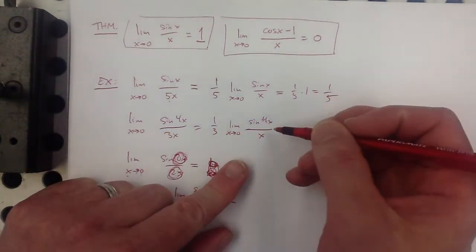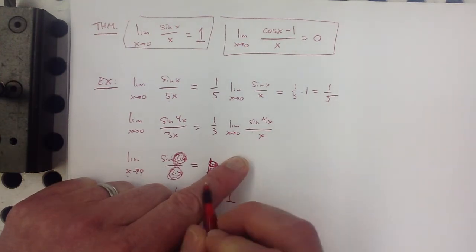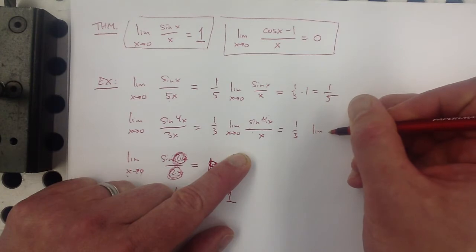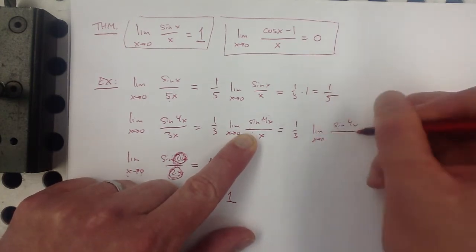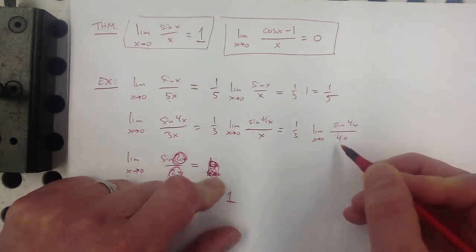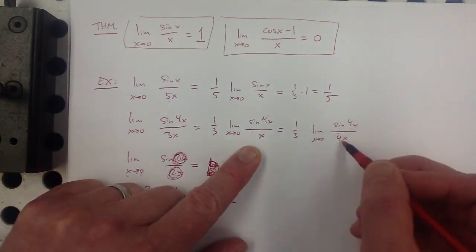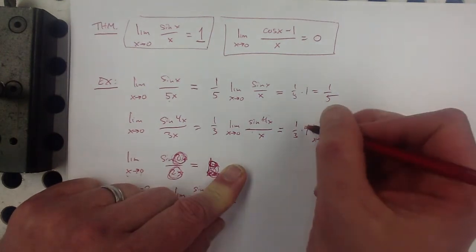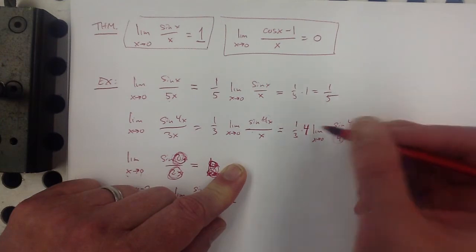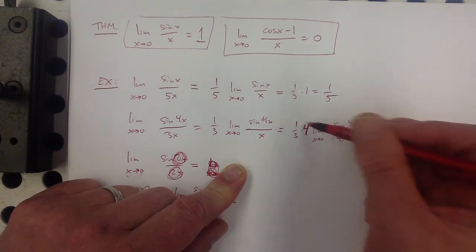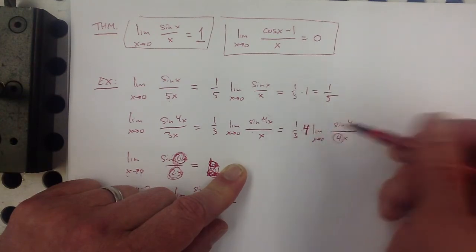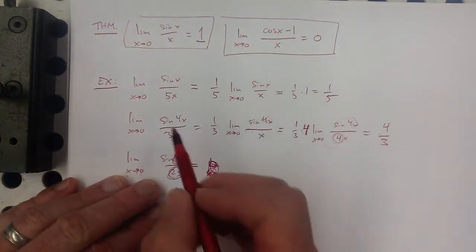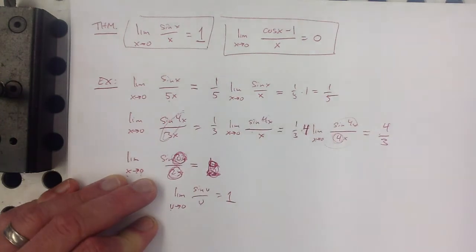Going back to sine(4x) over 3x: take the 3 outside as 1/3, leaving sine(4x) over x. To make the 4 appear on the bottom — matching the argument — insert a 4 in the denominator and compensate by multiplying by 4 outside. So 4 times 1/3 times (sine(4x) over 4x) gives 4/3 times 1, which is 4/3. Notice it's just the ratio of the numbers inside the arguments.